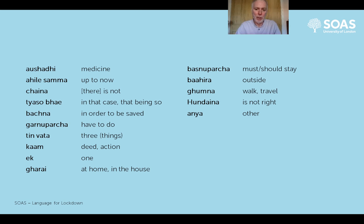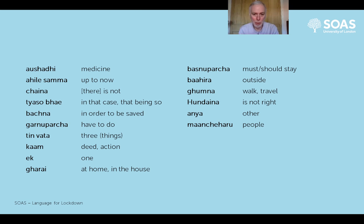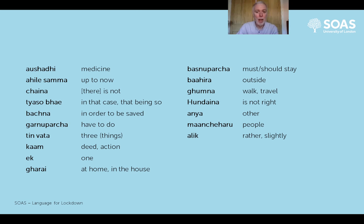'Anya' is an adjective meaning 'other'. 'Manche haru' - we had 'manche' meaning 'person'. 'Manche haru' is 'people'. Nepali is nice and easy when you want to make plural nouns, because you simply take a singular noun like 'manche' and add on the word 'haru', which is always the same whatever you add it to - turning 'person' into 'people'. 'Alik' means 'a little', 'rather', 'slightly'.